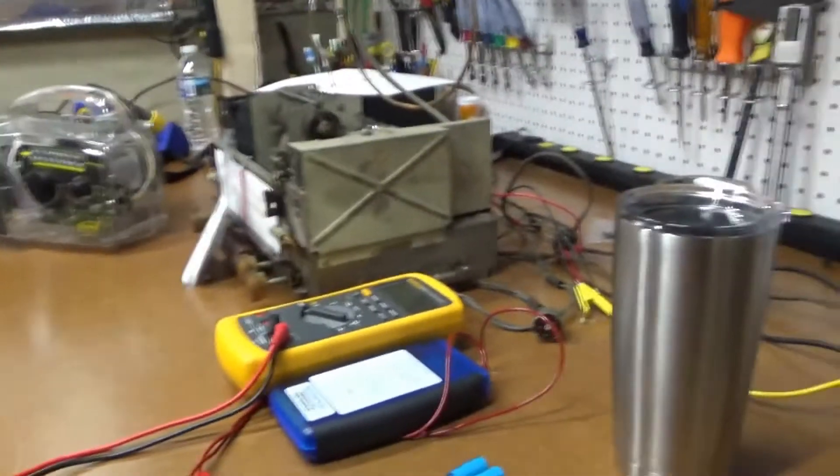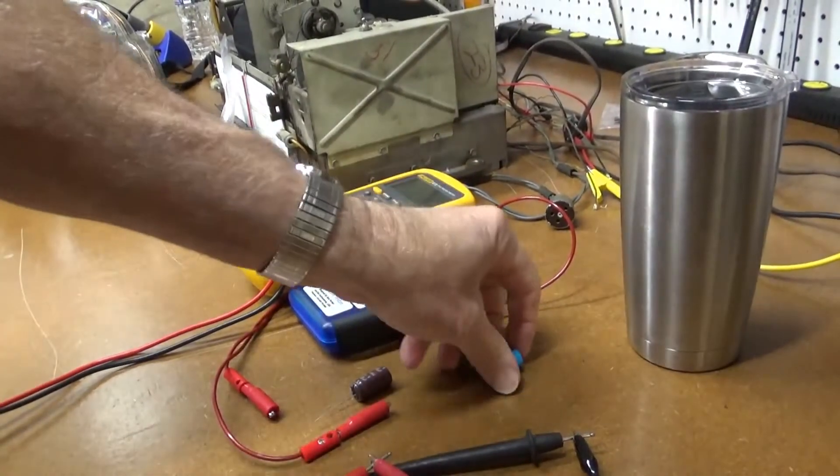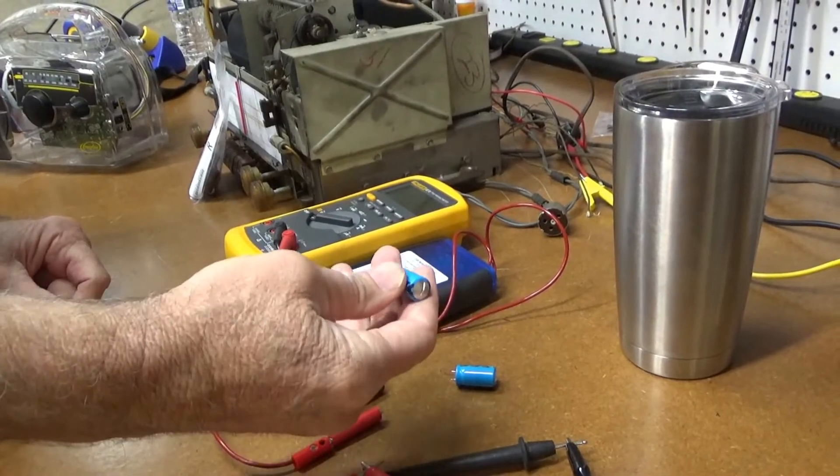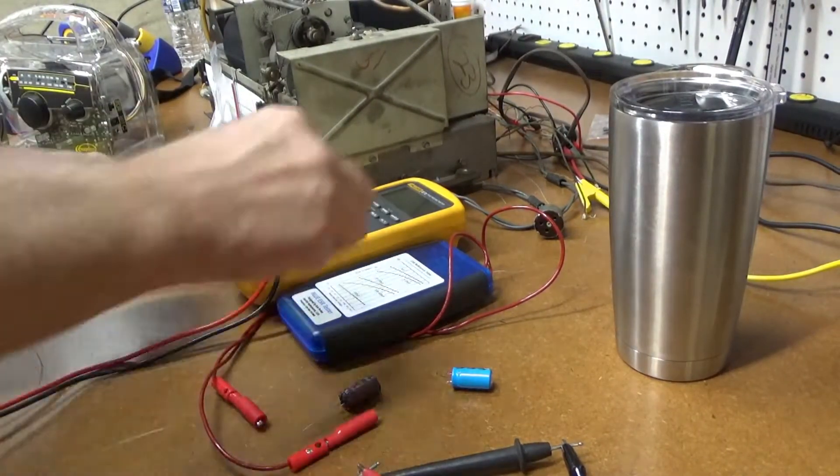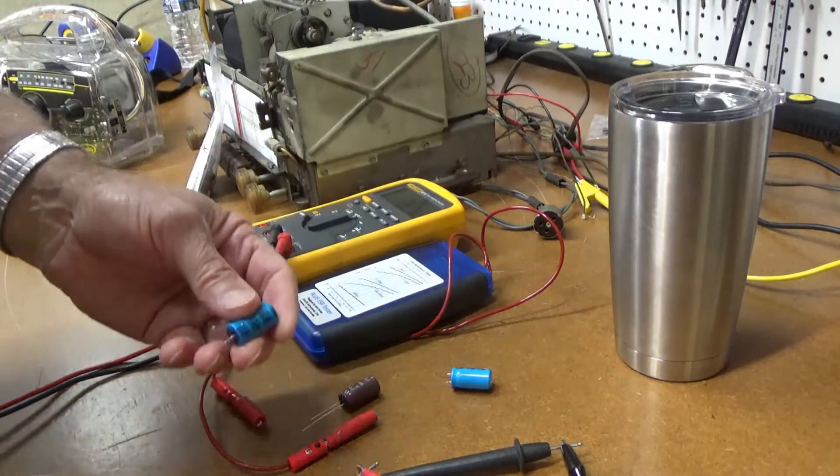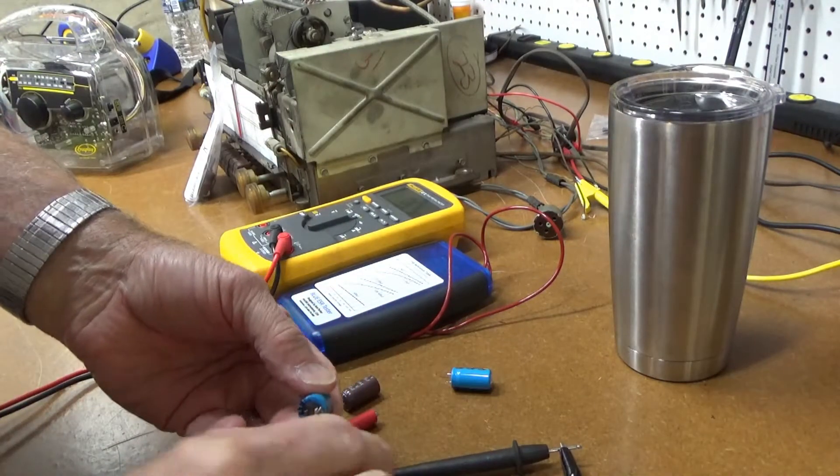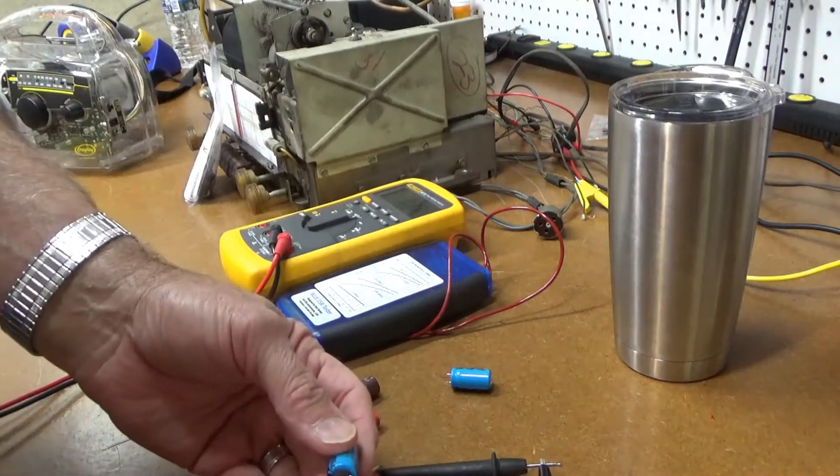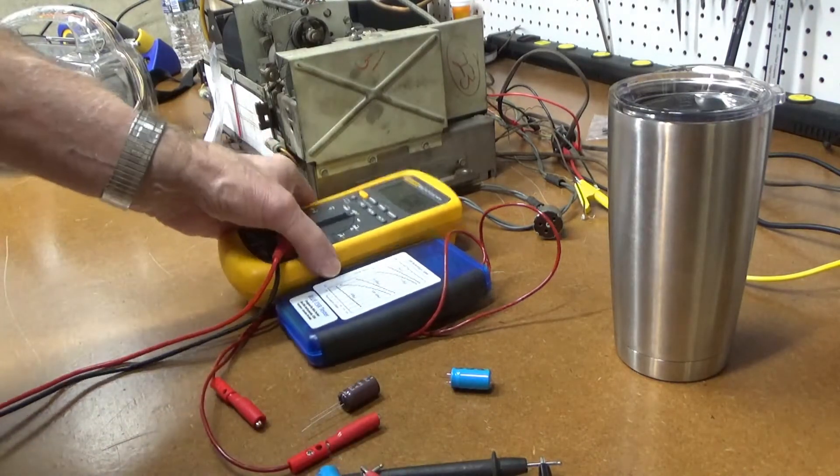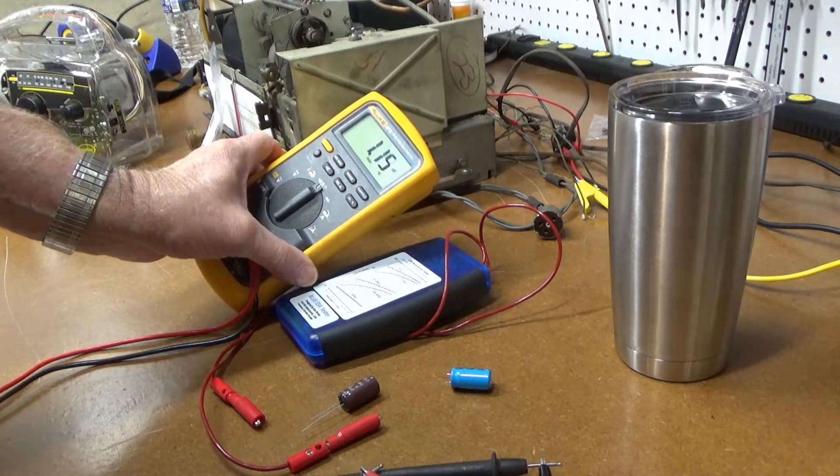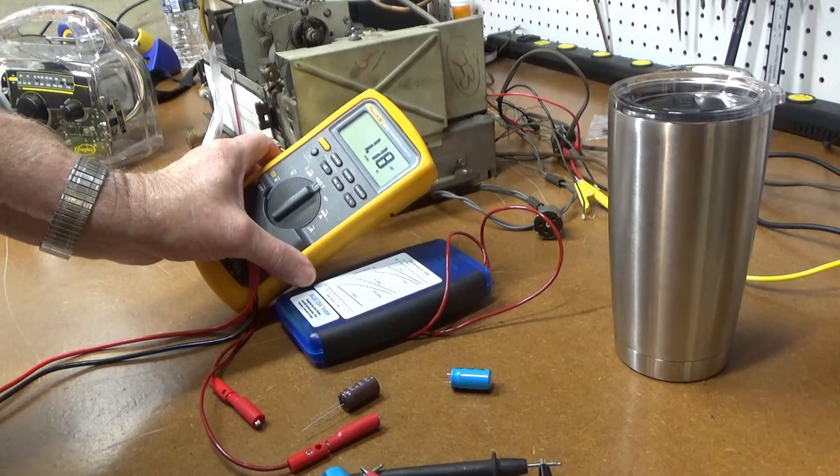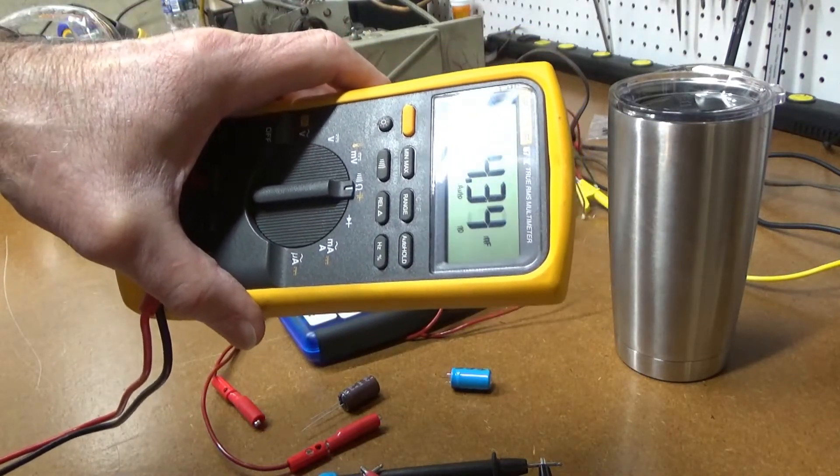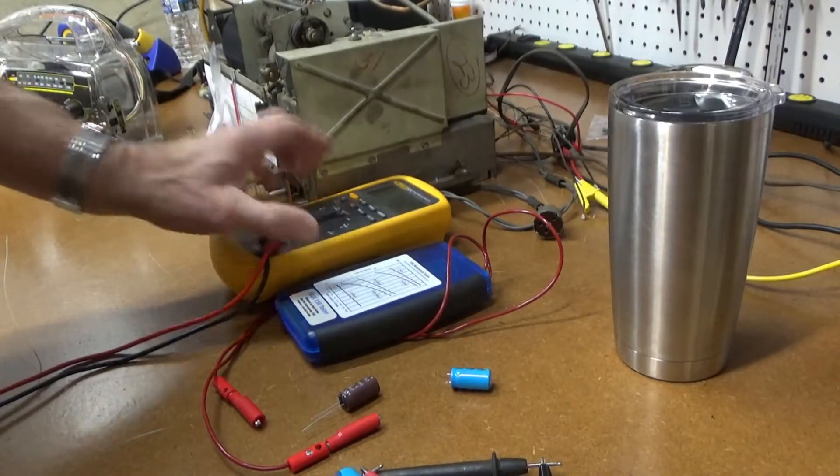Now here are the bad parts. And if the exploded ends is not enough to convince you that these are bad, let me go ahead and do some measurements here. This measures out on capacitance. It's supposed to be 6800 microfarads. And it's 1.4 nanofarads. Not too good.